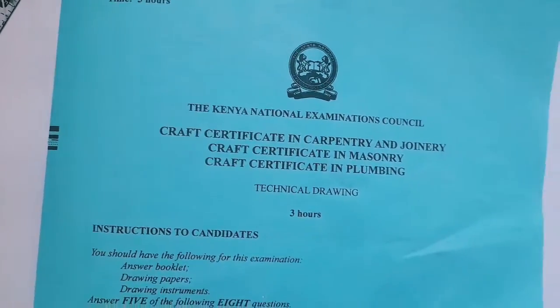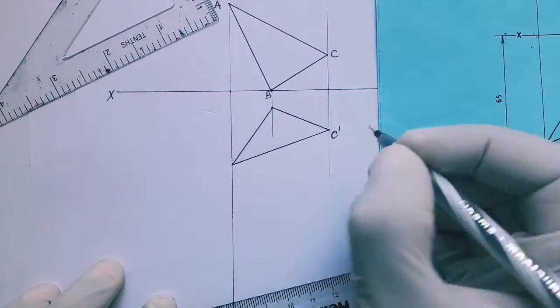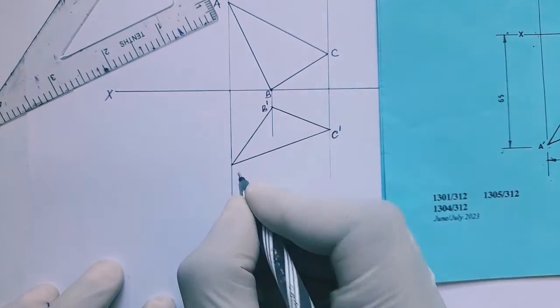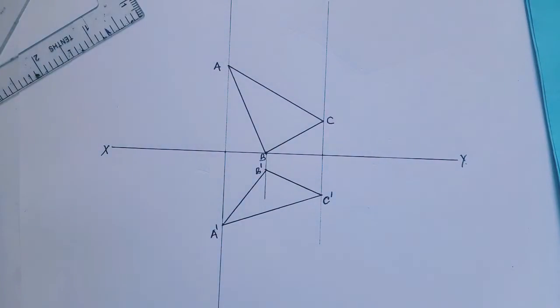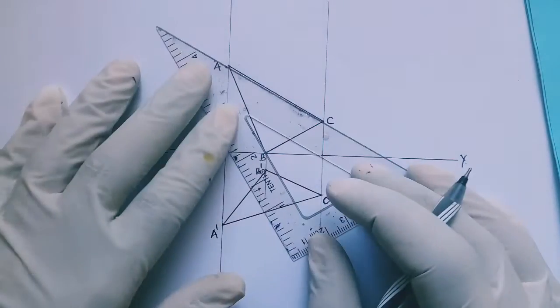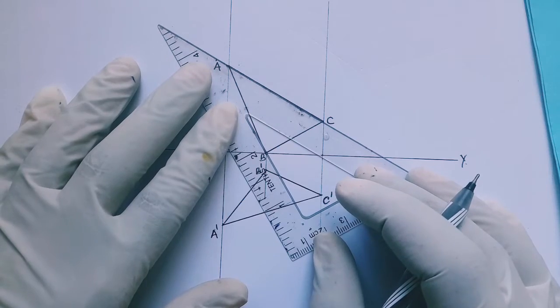Now we want to look at a question on a KNEC paper, that is Kenya National Examinations for Craft, as C prime, B prime, and A prime. Next we want to draw the true length which will be joined together to give us a true shape.